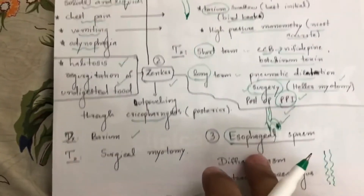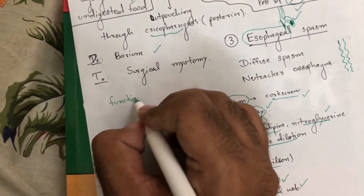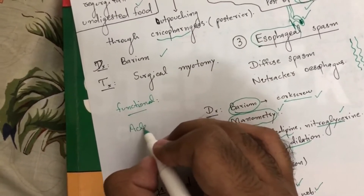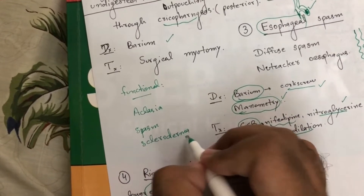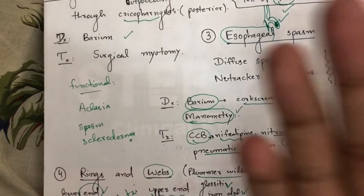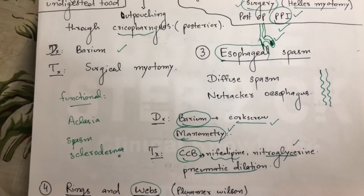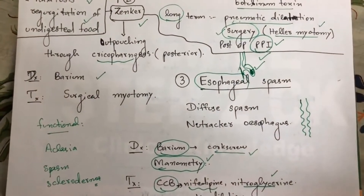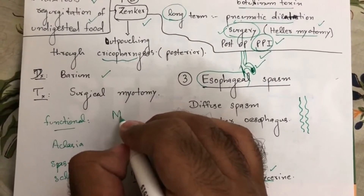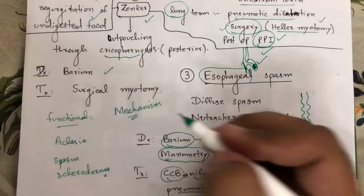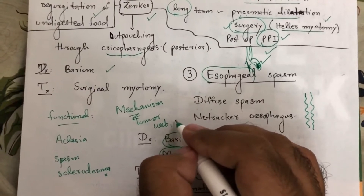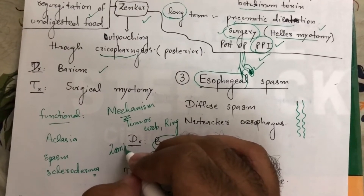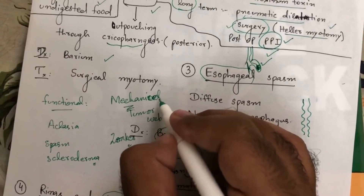Treatment for rings and webs is pneumatic dilation to open the esophageal pathway. In summary, the functional motility disorders to remember are: achalasia, esophageal spasm, and scleroderma (systemic sclerosis). Scleroderma causes esophageal problems and will be covered when studying autoimmune diseases. Mechanical disorders include benign esophageal strictures, rings, webs, and tumors — both benign and malignant.